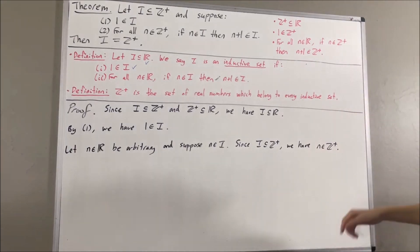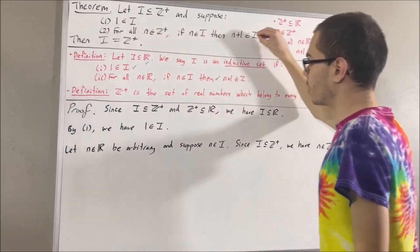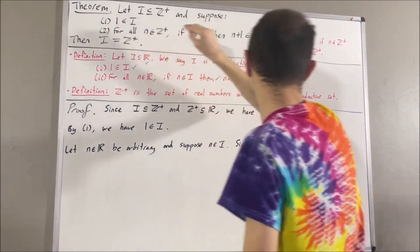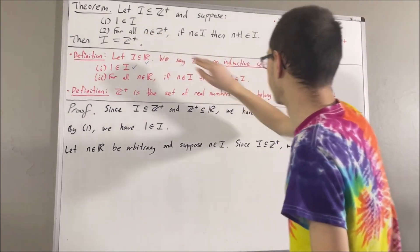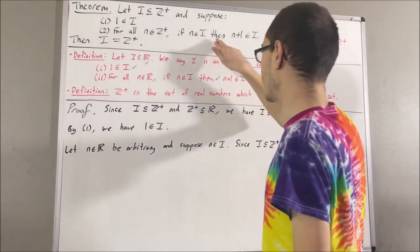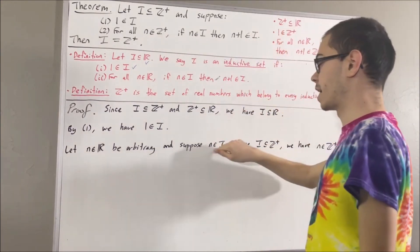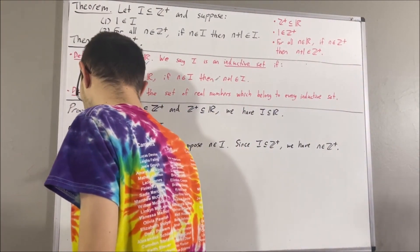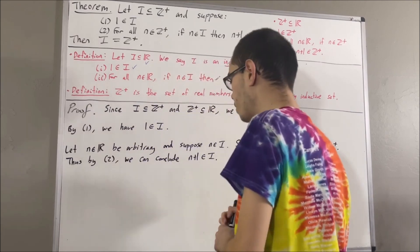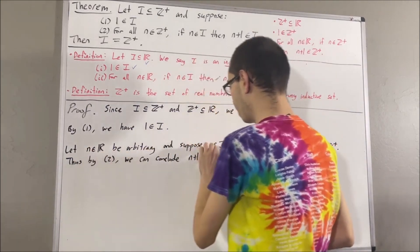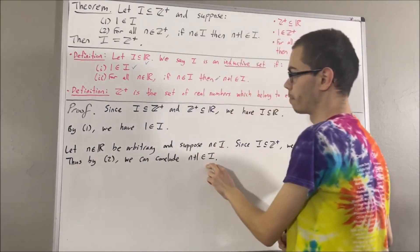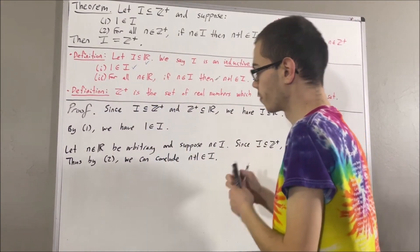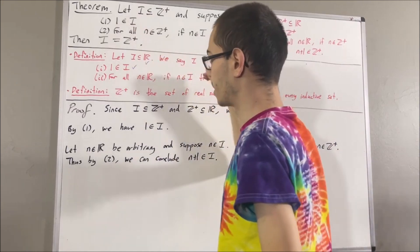So now we're in a position to apply the second fact that we were given. This statement works for every positive integer, so in particular it must work for the positive integer n. Taking n to be n, we have: if n is an element of i, then n plus 1 is an element of i. Well, we know that n is an element of i, so we can conclude that n plus 1 is an element of i. So we have shown: for any real number n, if n is an element of i, then n plus 1 is an element of i. So we have verified the second condition, and i satisfies all requirements to be an inductive set.